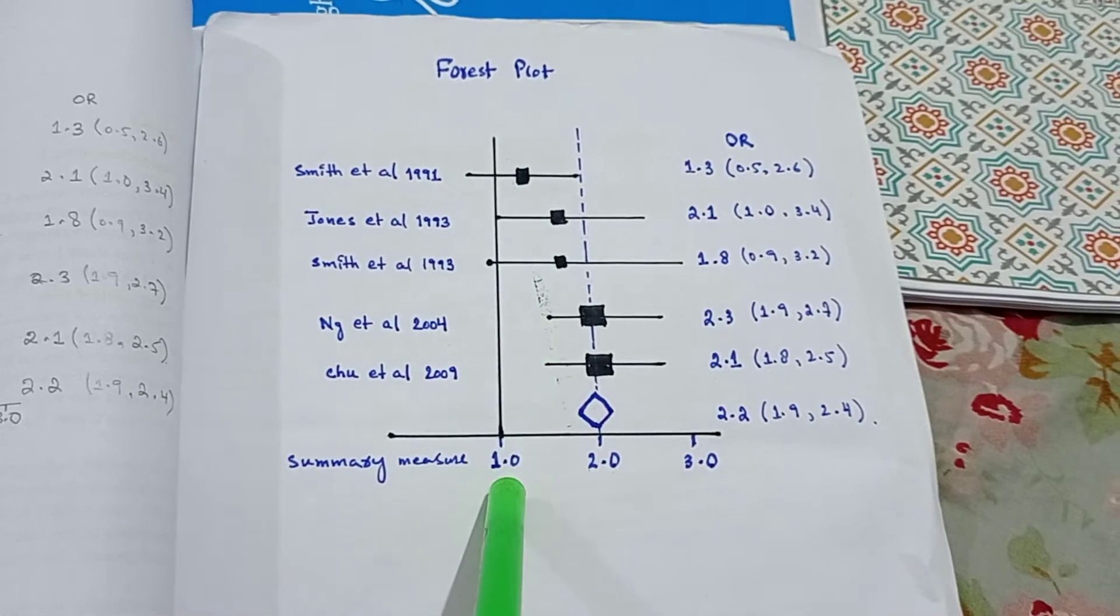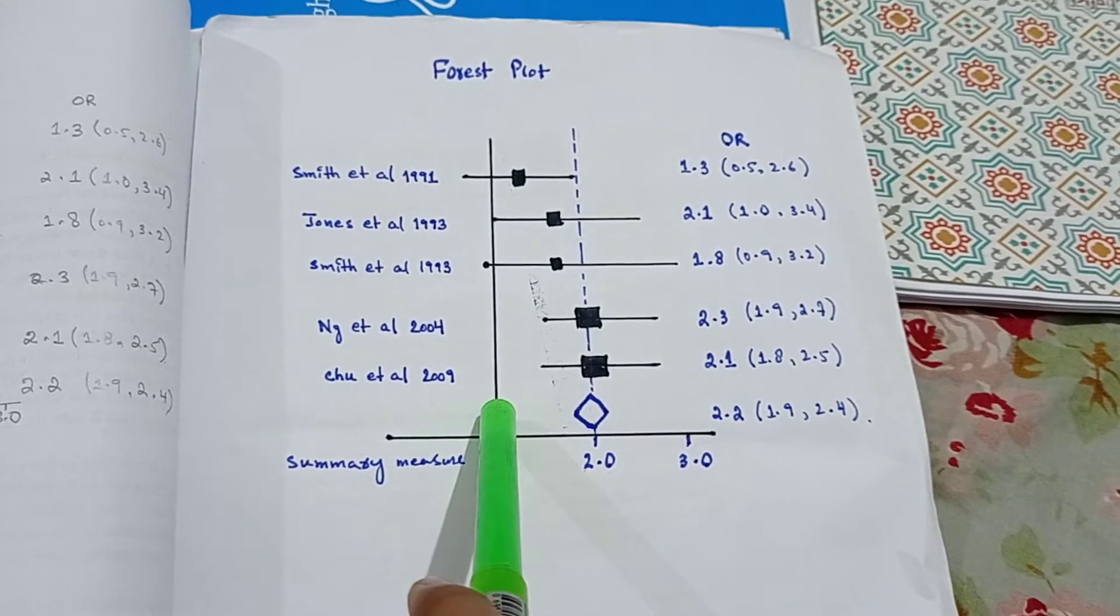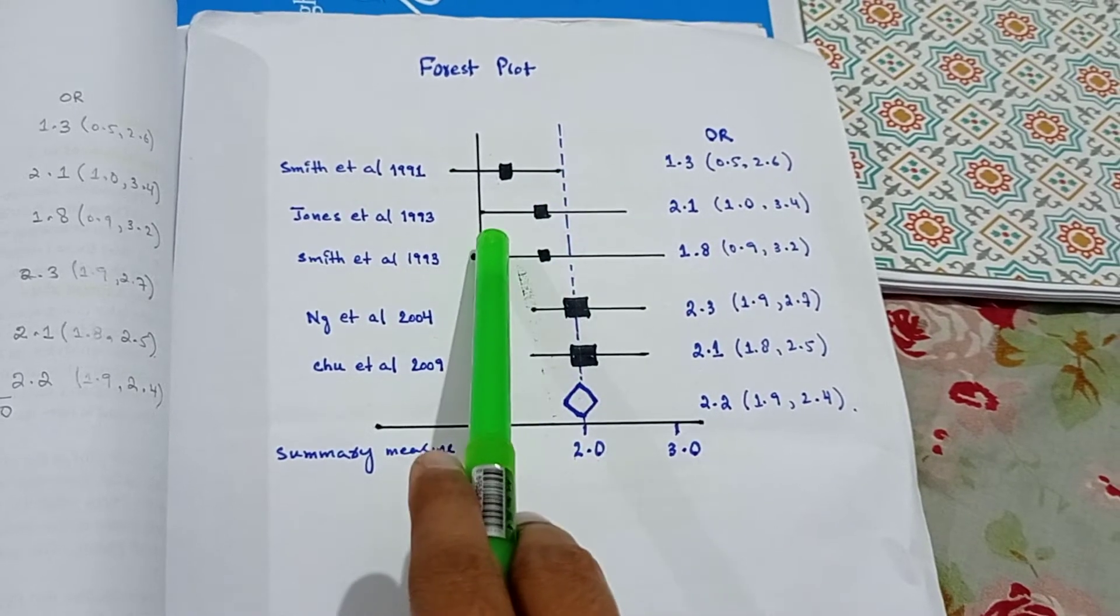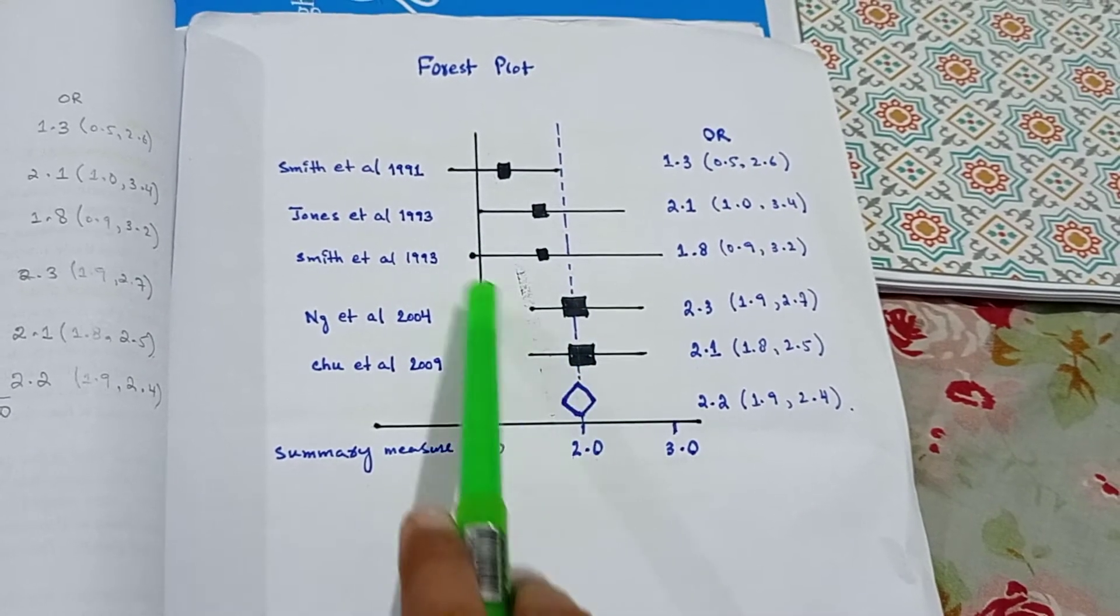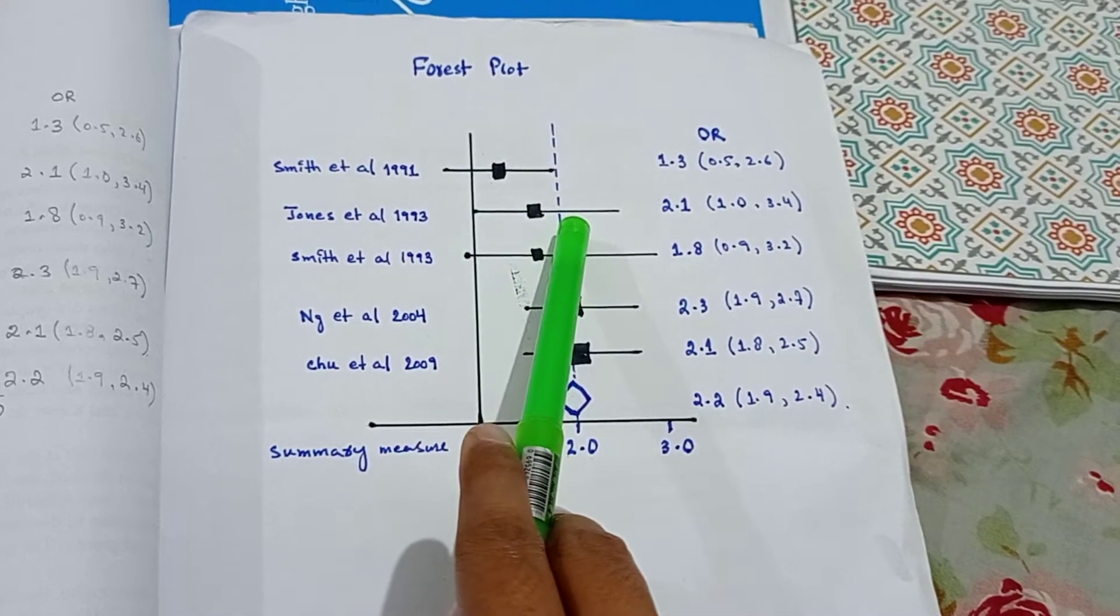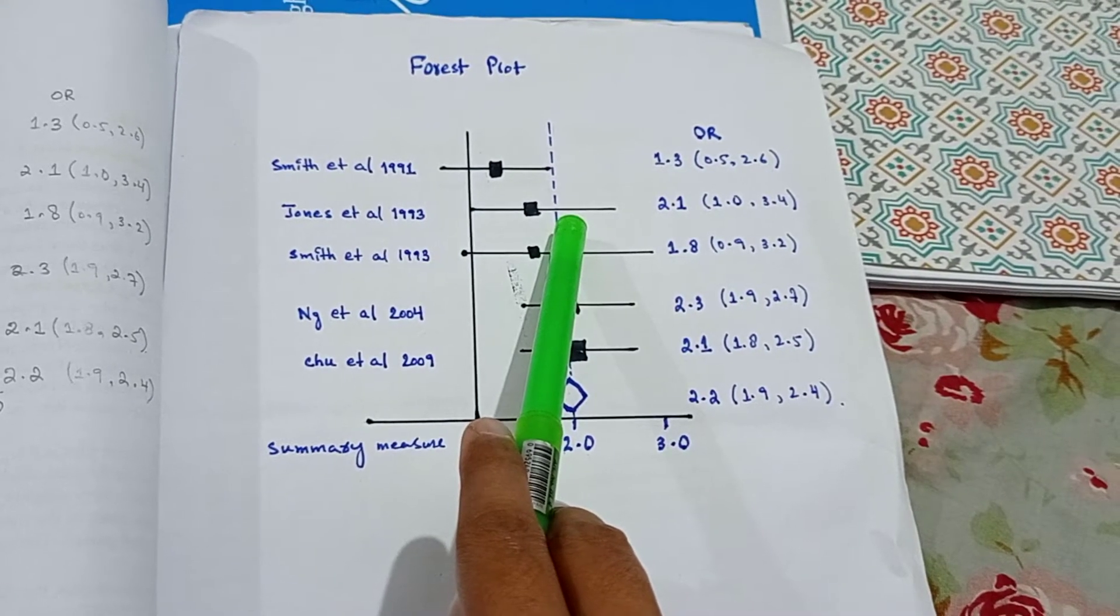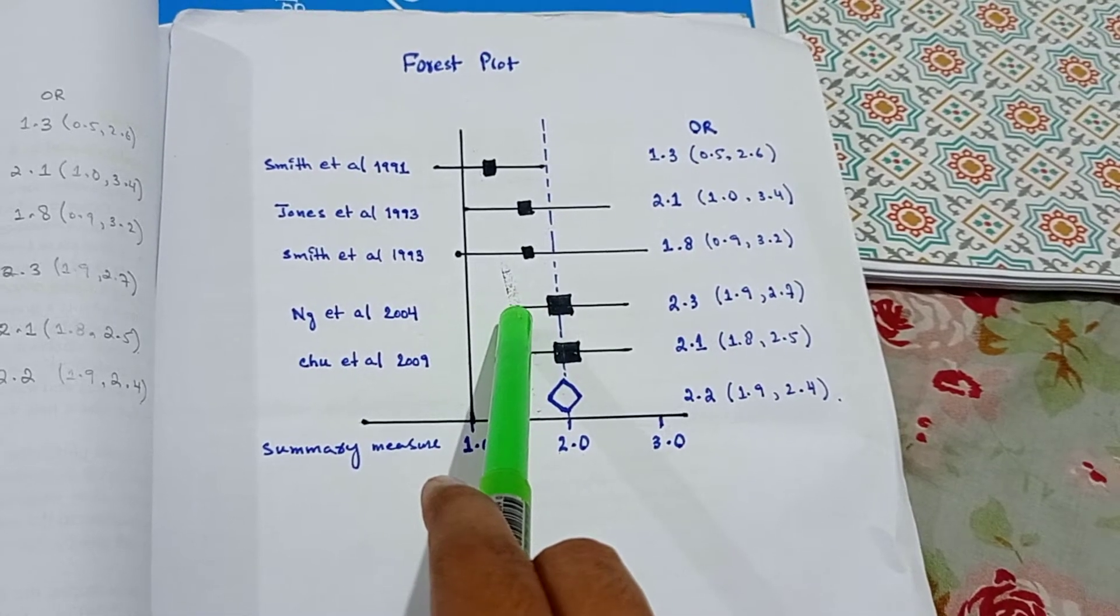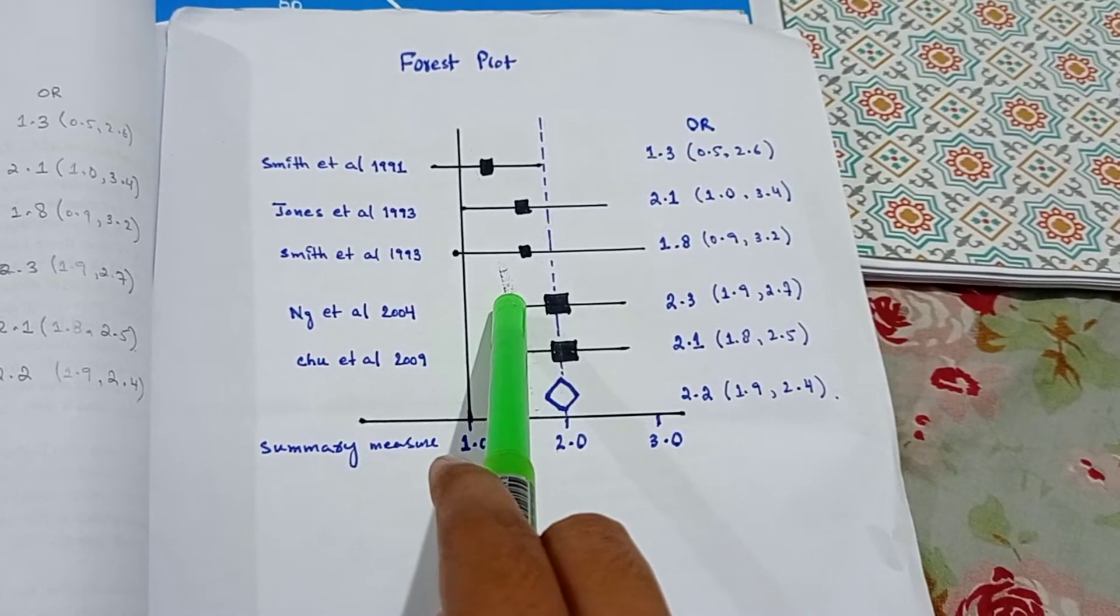In the middle is a vertical line. This is the line of no effect. And the horizontal lines are representing the confidence interval of the studies. The wider the horizontal line, the larger the confidence interval and less reliable the data. The shorter the horizontal lines, the narrower the confidence interval and more reliable the data.